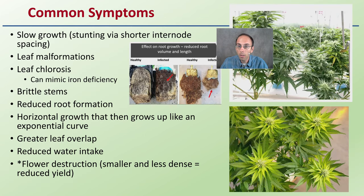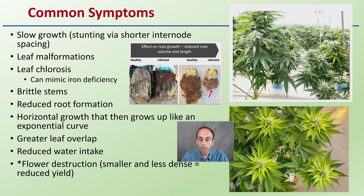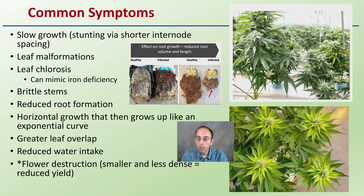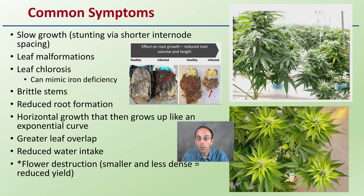Common symptoms — while this seems like a pretty long and extensive list — include slow growth due to stunting or decreased internode spacing, leaf malformations, and leaf chlorosis that can mimic an iron deficiency. In these images, you can see it kind of looks like an iron deficiency, with upper leaves being a little lighter in coloration, lighter green to yellow. Leaf chlorosis is a symptom.